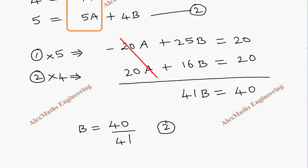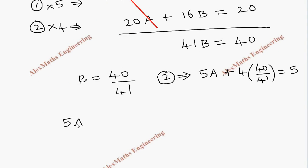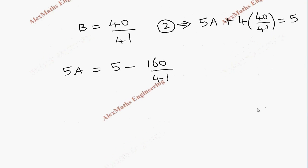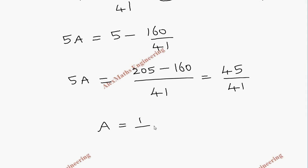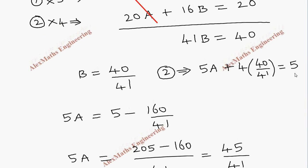Substituting B = 40/41 into equation 2: 5A + 4·(40/41) = 5. So 5A = 5 − 160/41. Taking LCM 41: 5A = (205 − 160)/41 = 45/41. Therefore A = (45/41)·(1/5) = 9/41.